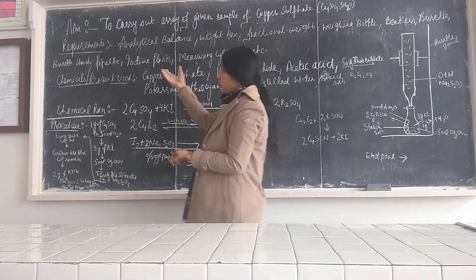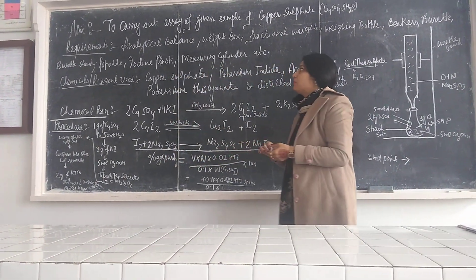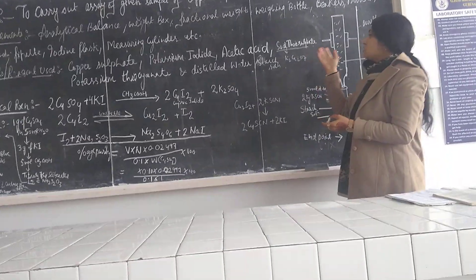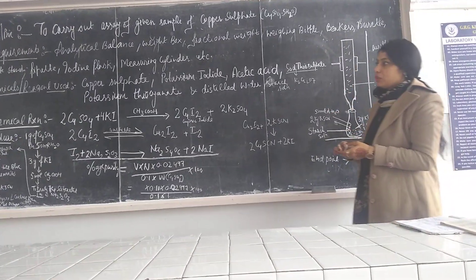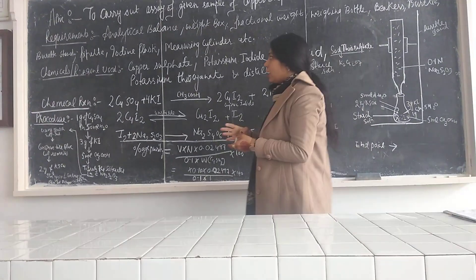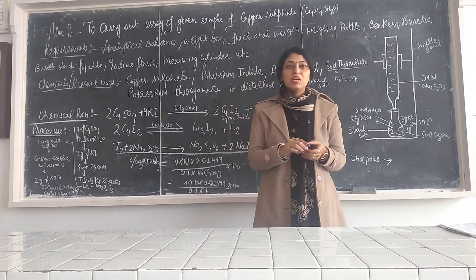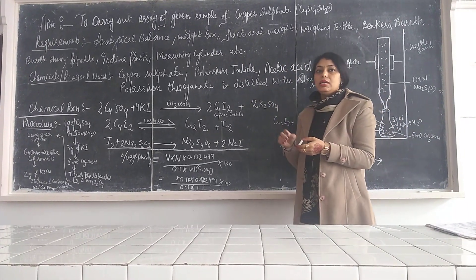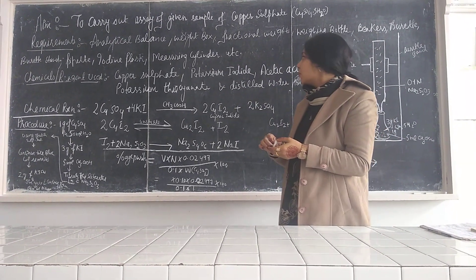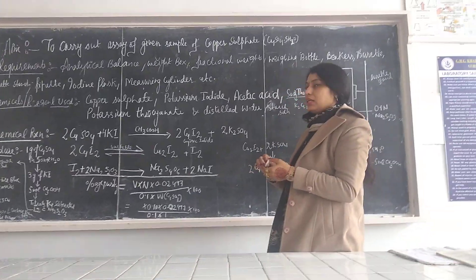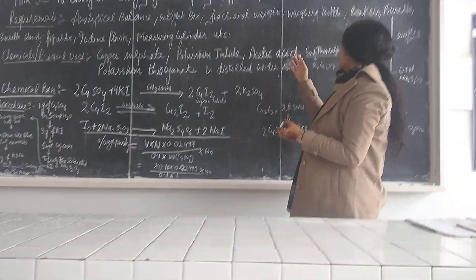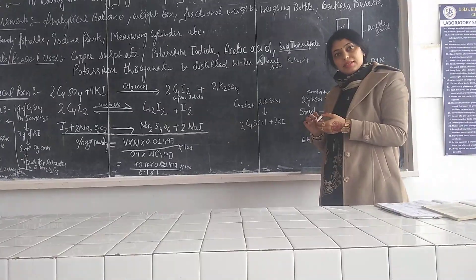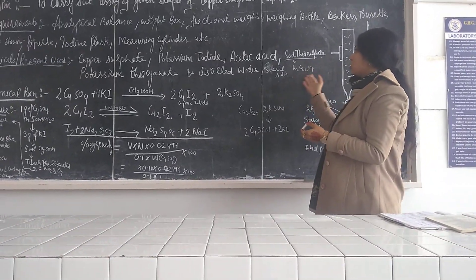For this practical we particularly need an analytical balance, weight box, bottle, pipette, burette, burette stand, iodine clasp, conical flask, and measuring cylinder. For chemicals, we need potassium iodide, potassium thiocyanate, copper sulfate, sodium thiosulfate, STKC, distilled water, starch as an indicator, and potassium dichromate.